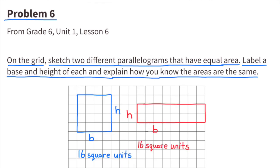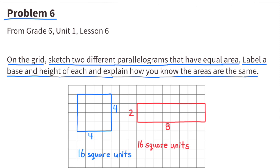I kept it simple. I made one square with a base of 4 and a height of 4, and 4 times 4 equals 16 square units. The second parallelogram is a rectangle, with a base of 8 and a height of 2, and 8 times 2 is 16 square units.